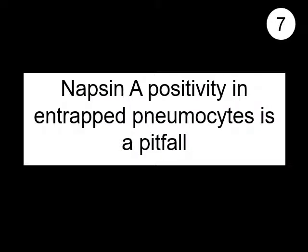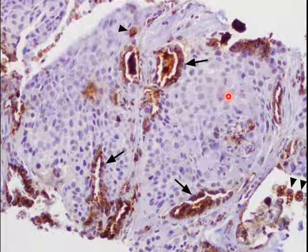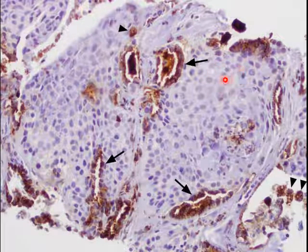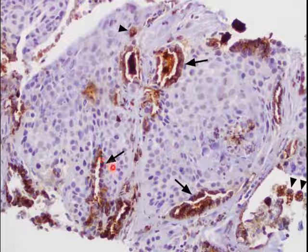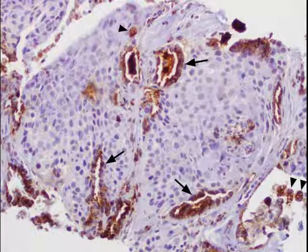Finally, our last fact is that Napsin A positivity in entrapped pneumocytes is a pitfall. In this example, the background tumor is actually squamous cell carcinoma — the squamous cell carcinoma cells are negative for Napsin A. However, some cells appear positive, which might suggest focal Napsin A positivity. But those are not tumor cells — they are entrapped pneumocytes and alveolar macrophages taking up Napsin. If you don't recognize this morphologically, you might misinterpret this tumor as an adenocarcinoma instead of squamous cell carcinoma.